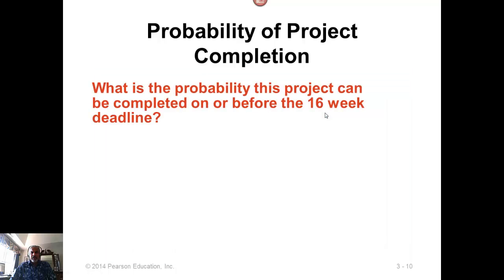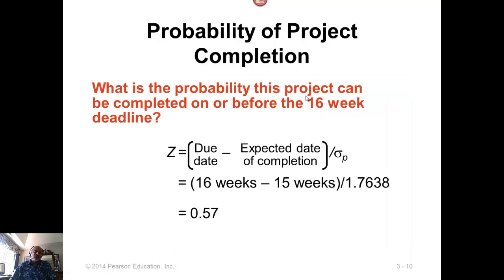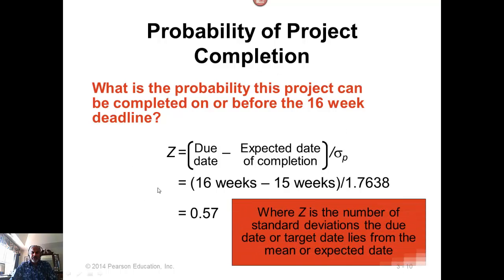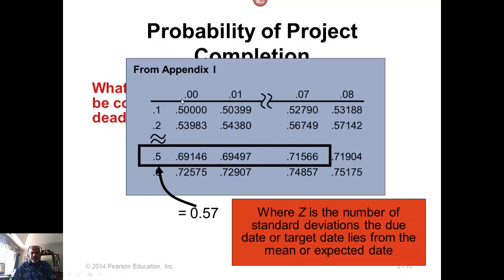Now we can compute probabilities like, what is the probability we can complete the project in 16 weeks? In that case, 16 weeks is the due date minus the expected completion time divided by the standard deviation gives you the Z value. You take the Z value to the normal distribution table in the back of the book, in the appendix. 0.57 gives you the probability. This is the cumulative probability, in other words, the probability that we can complete the project in 16 weeks. If you do 1 minus this, that will give you the probability that we will not be able to complete the project in 15 weeks.